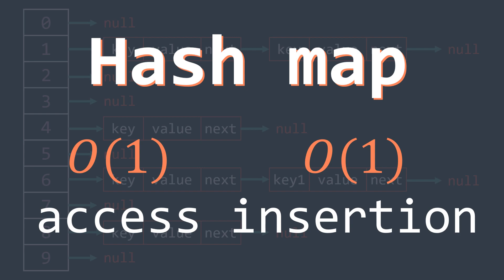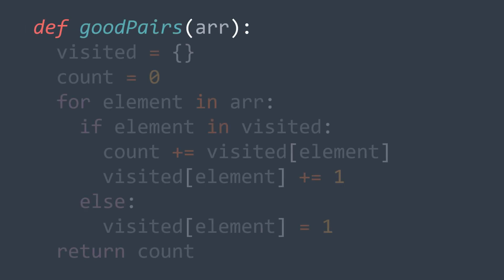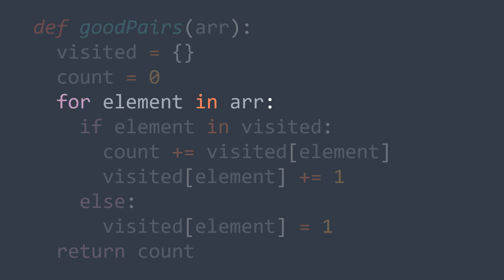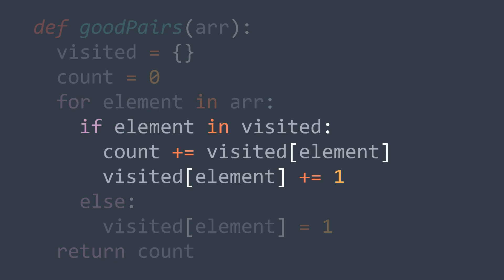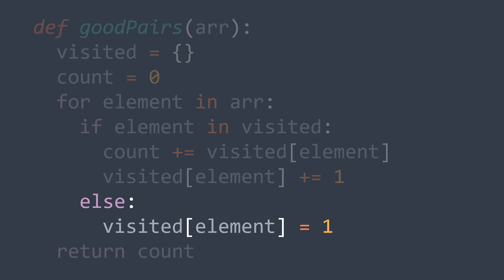In the code, the function takes R as a parameter. We create our hash map to track how many times we visited each value, and initialize a counter to 0. We traverse the elements of R — for each element we have two cases: if we've visited the current value before, we add the number of times we did to the counter and increment that count in the hash map. Otherwise, if it's the first time we see that value, we create the key in the hash map and set it to 1. After the loop, we return the counter.